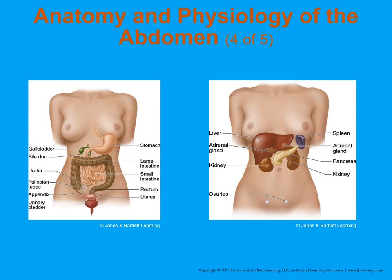Here is an illustration of the abdominal cavity and its contents. Notice the stomach, gallbladder, large and small intestine, and urinary bladder — those are things that can be damaged in blunt trauma or blast injuries. In the illustration on the right, we see the solid organs: the liver, spleen, adrenal glands, and others, which can be fractured or broken during some types of trauma.